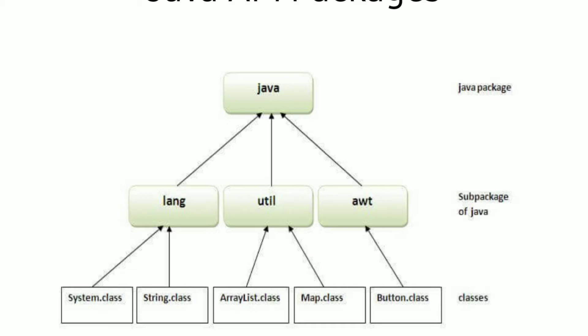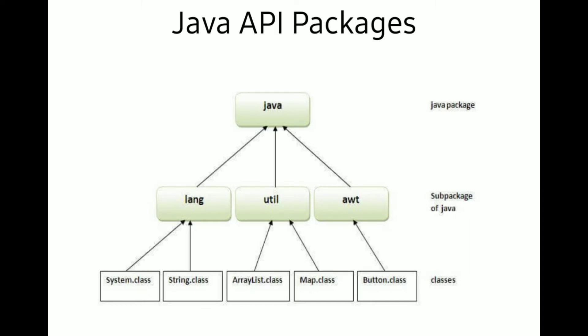In the diagram, Java is the root package for all the built-in packages in Java programming language. Java is the main package, so all the remaining built-in API packages are present inside the Java package. Hence, the Java package is called the root package or parent package. Some of the built-in sub-packages are: lang, util, awt, applet, and java.net package.